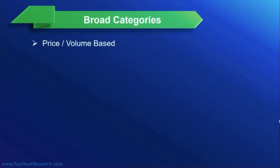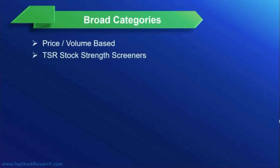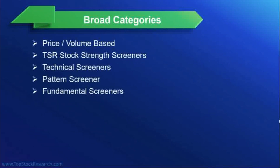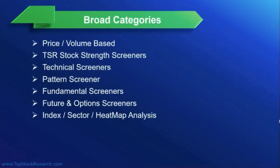The broad categories of the screener are: number one, price and volume based — the most common, most powerful, and most used. Then TSR stock strength index, technical screeners, pattern screeners, fundamental screeners, futures and options screeners, and index sector analysis and heat map. These are the broad categories available.